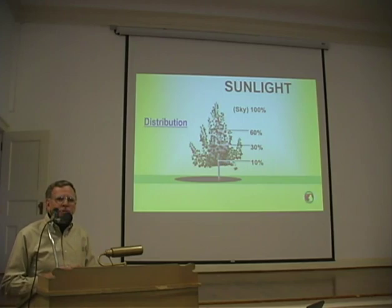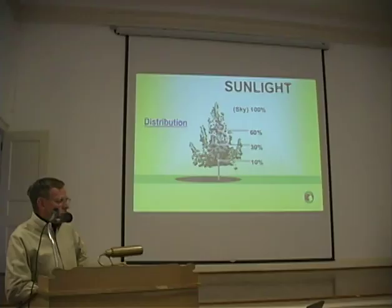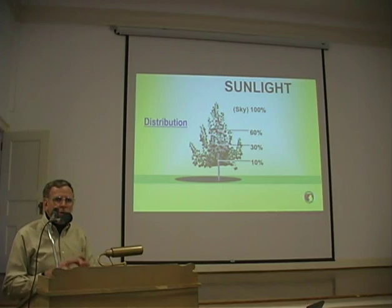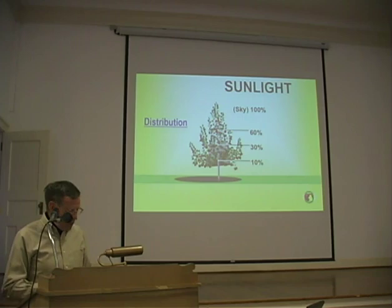Light distribution, or light transmission, refers to the amount of light at any particular place within the tree canopy. In this case, if you go up one meter from the ground at the center of the tree, it shows 10% — so only 10% of the full sunlight is getting to that particular point. Light distribution is how much light is received by an individual apple or spur in the tree canopy. Light interception is generally related to production, while light distribution is more related to fruit quality, fruit set, and flower development.